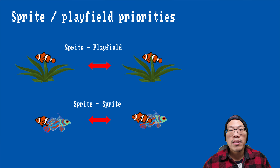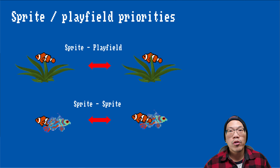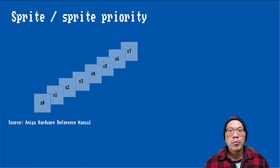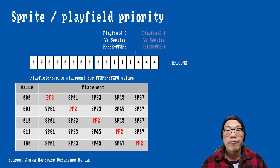In most cases, we are interested in how objects are drawn on top of each other or whether they appear in front or behind background objects. We can control these aspects by carefully planning our object organization and setting a few bits in a hardware register. As a general rule, lower numbered sprites will always appear in front of higher numbered ones, so you might want to consider that when planning your game or demo.